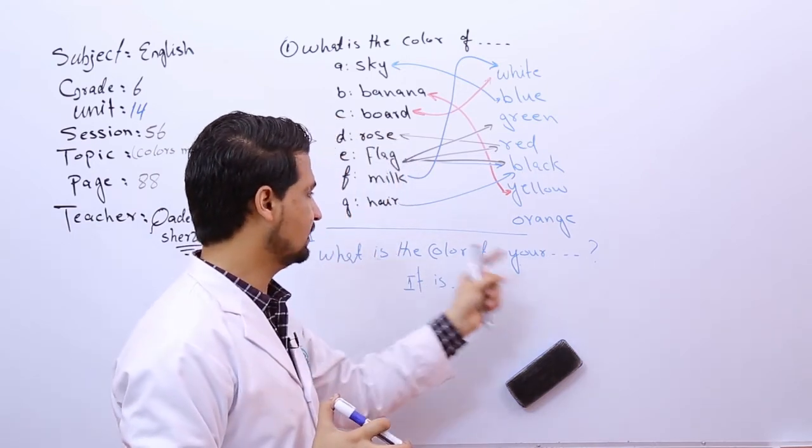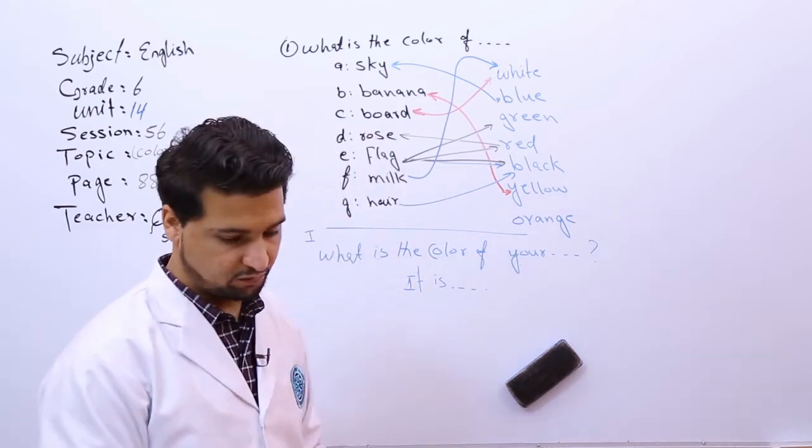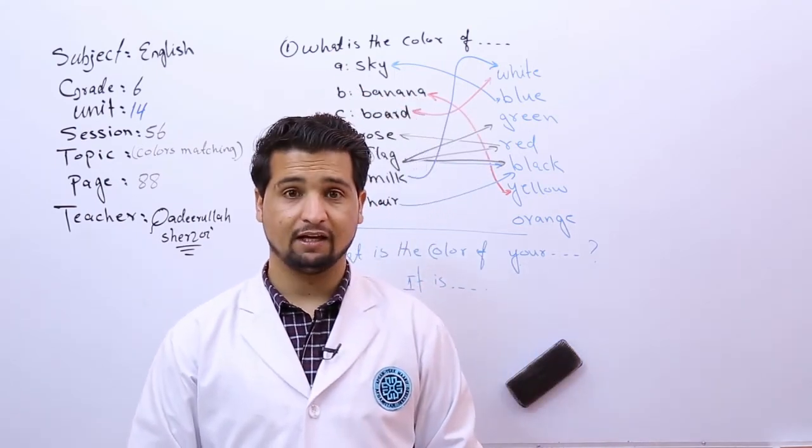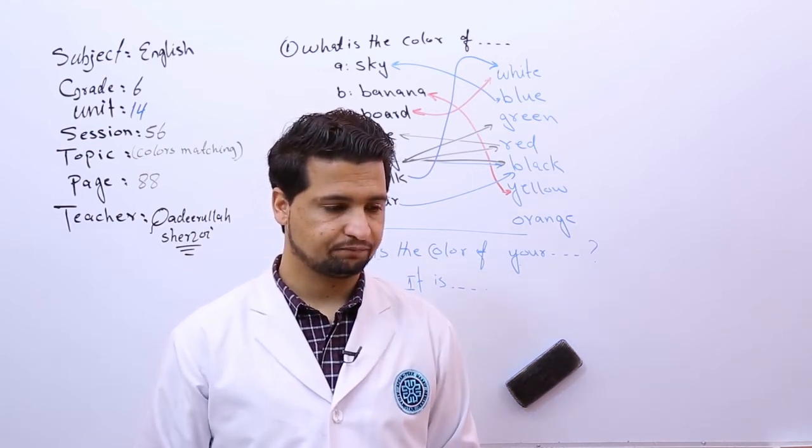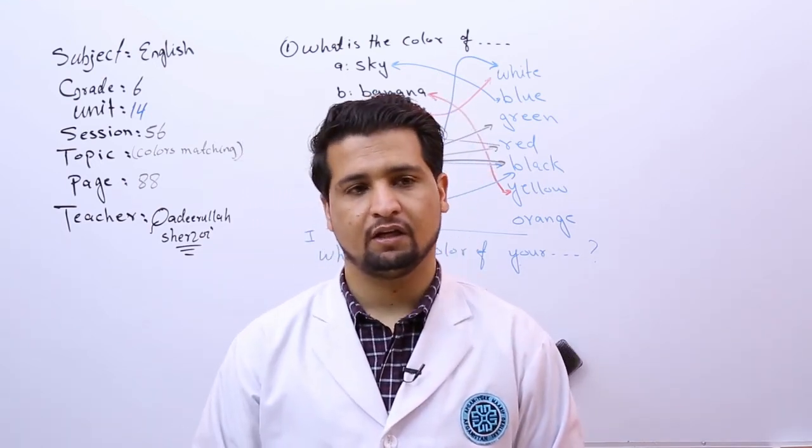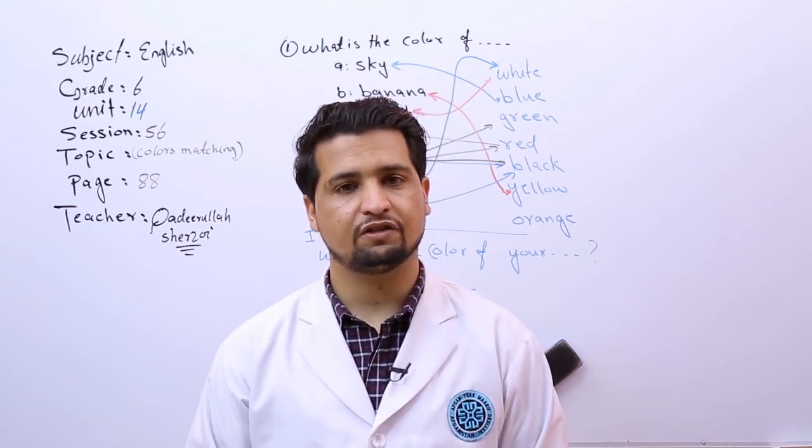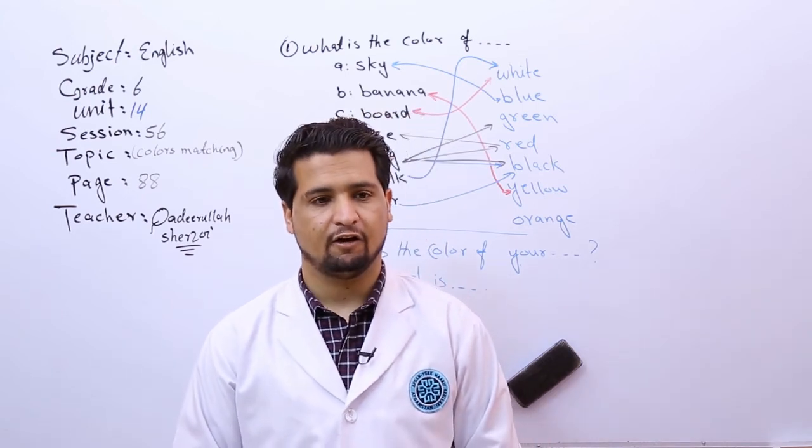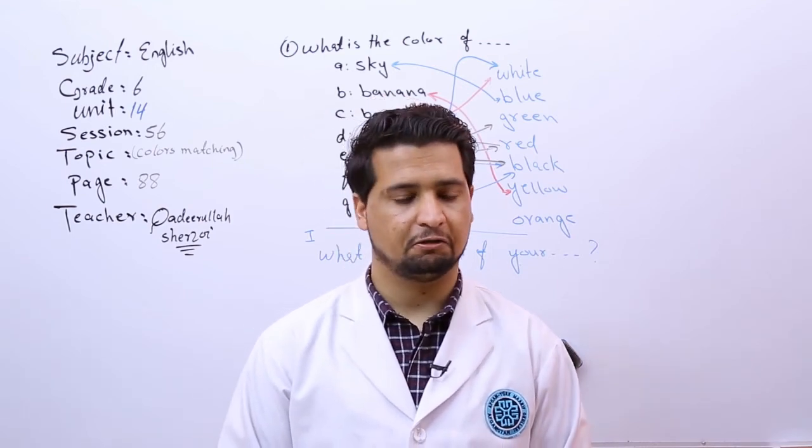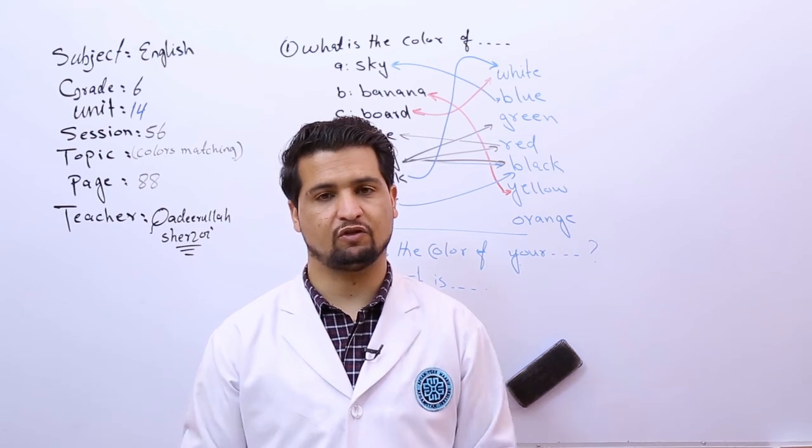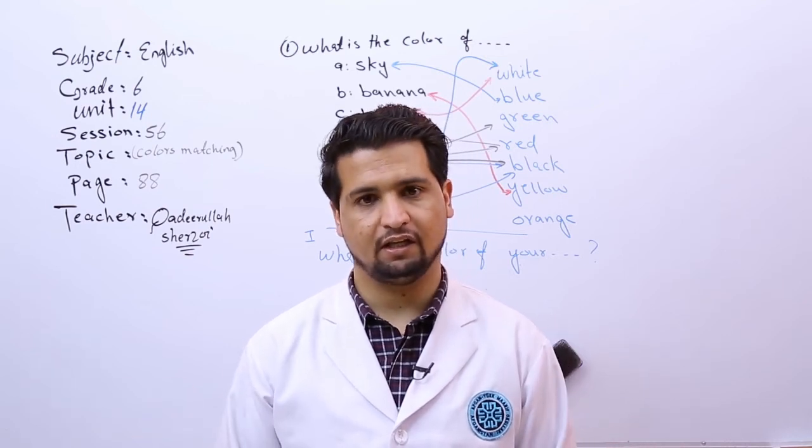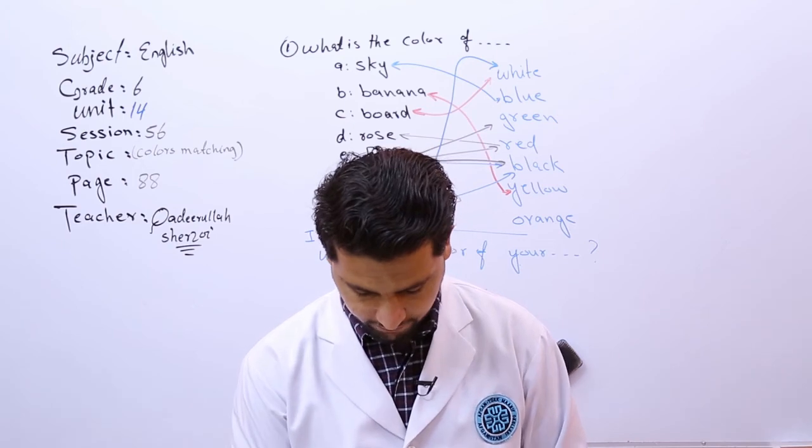So the same thing, what is the color of your... We need to ask the question. What is the color of your bag? It is green. What is the color of your coat? It is black. For example, what is the color of your shoes? It is black or brown. For example, what is the color of your robe? It is blue, it is orange, it is white, it is cream, whatever you can call it.